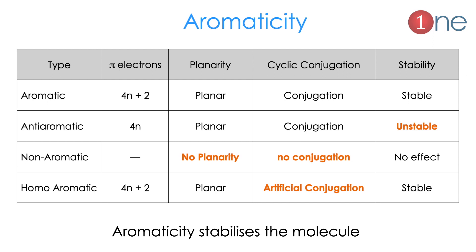First, let us see what aromaticity is. Aromaticity is all about pi electrons, planarity, and conjugation. So these three factors are important. An aromatic system should have 4n+2 pi electrons, it should be planar, it should have conjugation of double bonds, and it will be obviously stable.